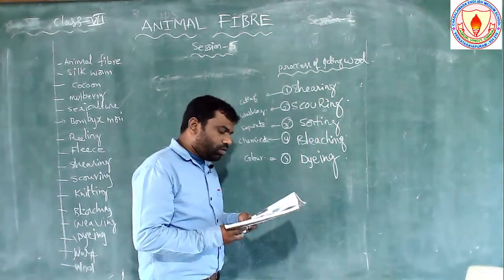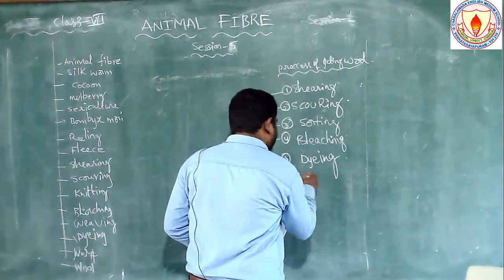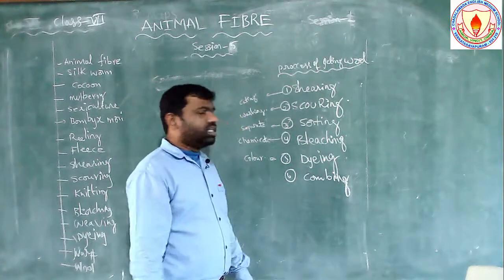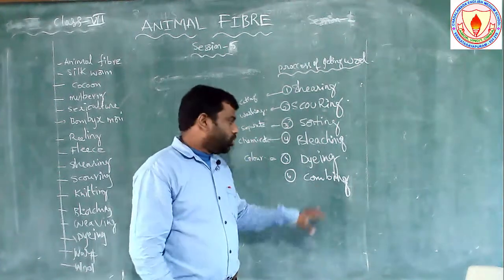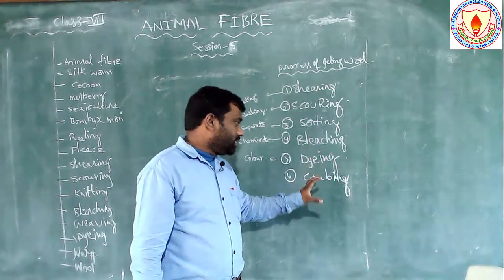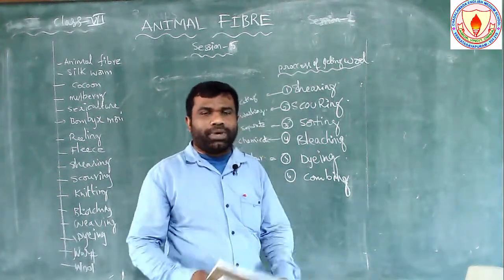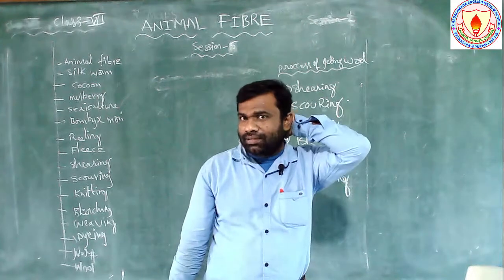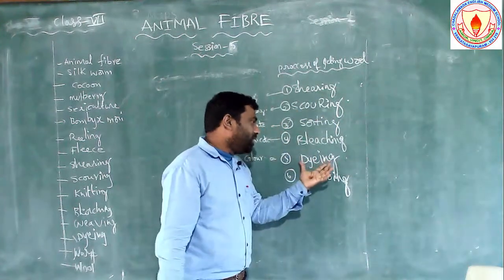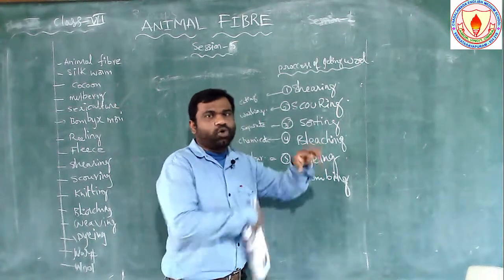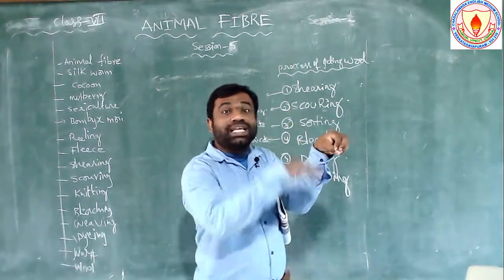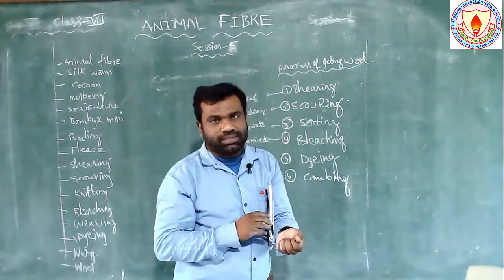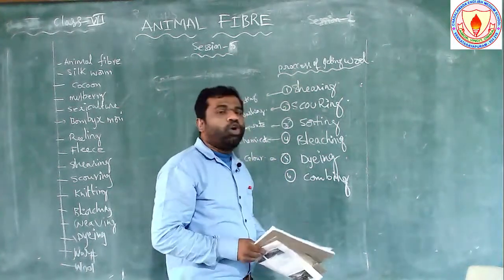The next process is combing. After dyeing, there is a combing machine. Combing means combing the hair — just like combing our own hair. After dyeing the hair of the animals, they comb the hair by using machines. That is the combing process.